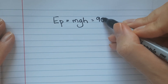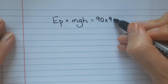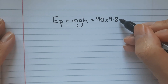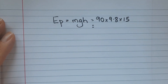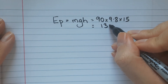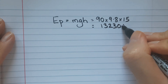In this question the mass is 90 kilograms, we're told the gravitational field strength is 9.8 newtons per kilogram, and the change in height is 15 metres. We can always use our calculator in GCSE physics, so 90 multiplied by 9.8 multiplied by 15 equals 13,230 joules.